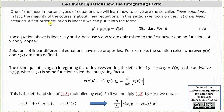A first-order equation is linear if it can be written in the form y prime plus p of x times y equals f of x. We call this standard form. The equation above is linear in y and y prime because y and y prime are only raised to the first power and no other functions of y and y prime appear.